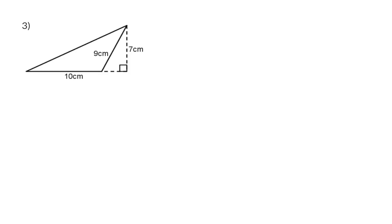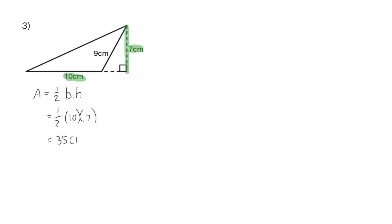In example 3 we once again have a triangle and we need to identify the base and the perpendicular height. The base can now be either the 10 centimeters or the 9 centimeter side of this triangle. But we are going to have to use the 10 centimeters because we do not have anything drawn perpendicular to the 9 centimeter side. We do however know that the height perpendicular to our 10 centimeters is 7. So substituting into the formula we will have a half times our base of 10 times the height of 7, and that is 35 centimeters squared.